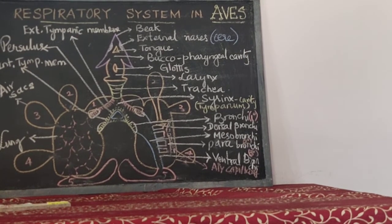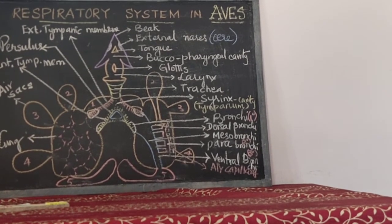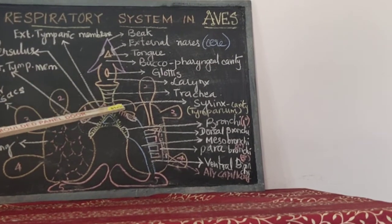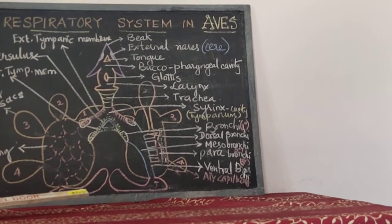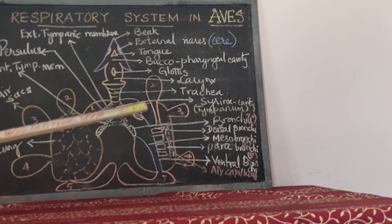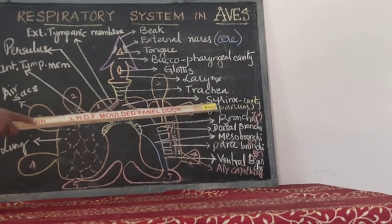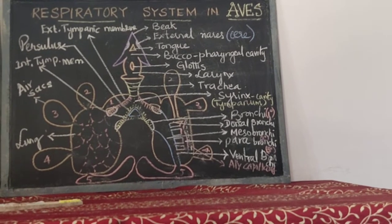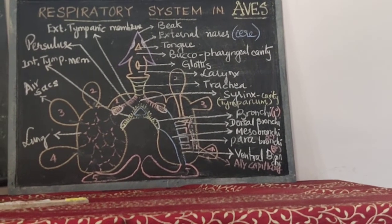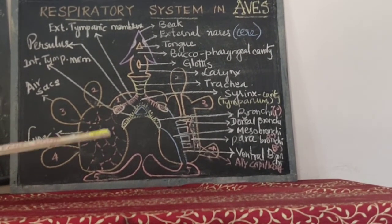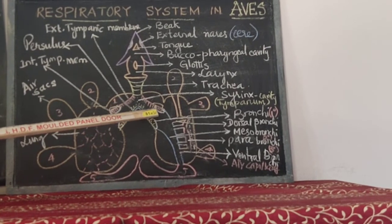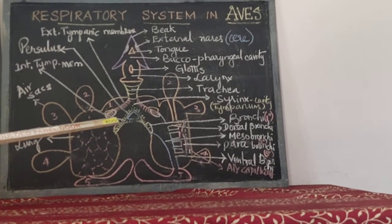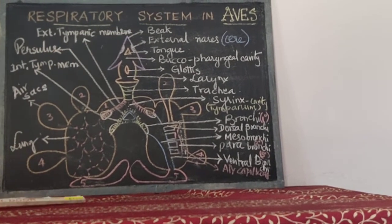Those muscles are specially for this: syringial muscles of intrinsic type, and sternotracheal muscles on the outside. These two types — the intrinsic syringial muscles and the sternotracheal muscles — bring about the vibration movement of the structure of the syrinx, thereby producing sound in birds.